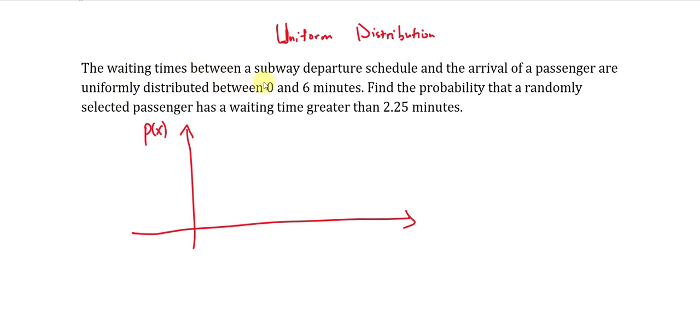The waiting times between a subway departure schedule and the arrival of a passenger are uniformly distributed between 0 and 6 minutes. Find the probability that a randomly selected passenger has a waiting time greater than 2.25 minutes.